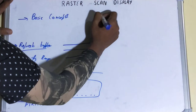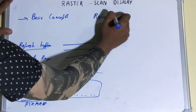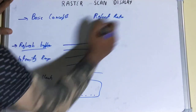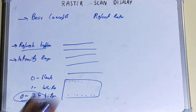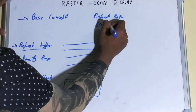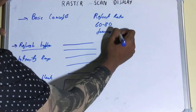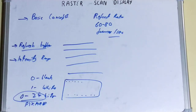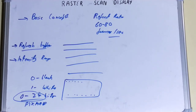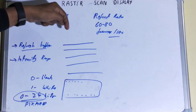Now let's discuss the refresh rate. In your raster scan display, the refresh rate was calculated per second and was 60 to 80 frames per second — so you can imagine how quick it was at that time. At the end of each scan line, the electron beam returns to the left side of the screen to begin displaying the next scan line, which is known as horizontal retrace.